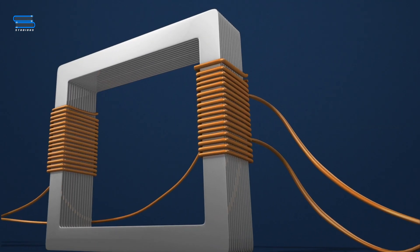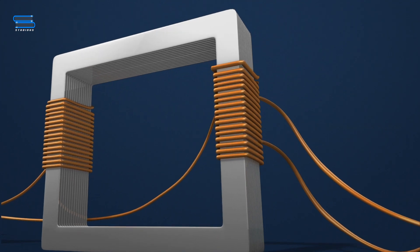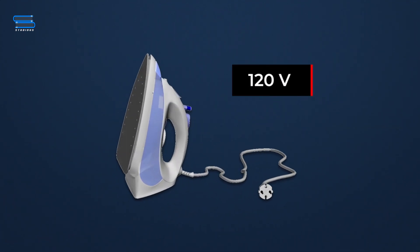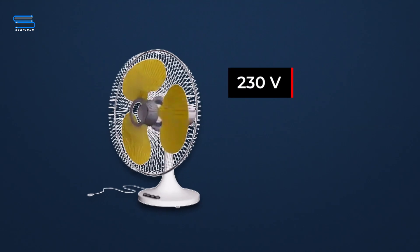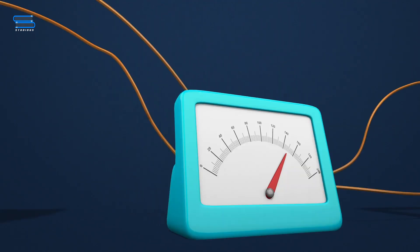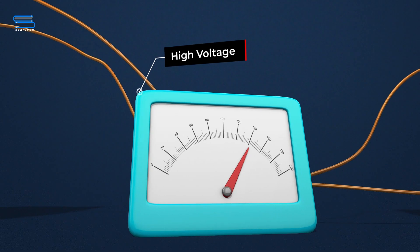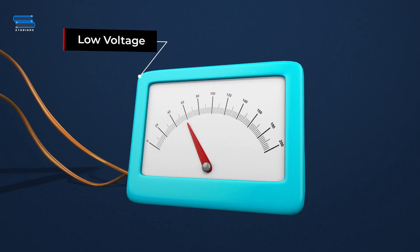However, most of our domestic electric appliances work at low voltages, say about 120 volts or 230 volts. Therefore, the high voltage should be decreased to a low voltage before it is used at homes.